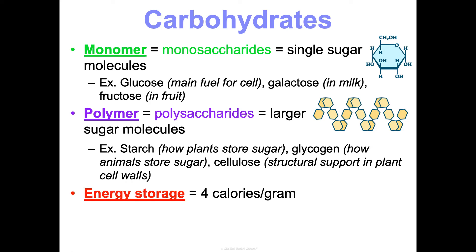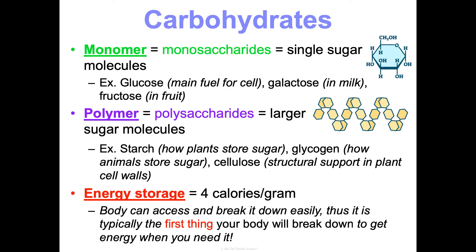The last thing I'll cover for each macromolecule is energy storage. This number will make more sense as we compare them. Carbohydrates have about four calories of energy per gram. This matters because our body can access and break down carbs easily — they store a decent amount of energy, and thus they're typically the first thing your body goes to when it needs energy.